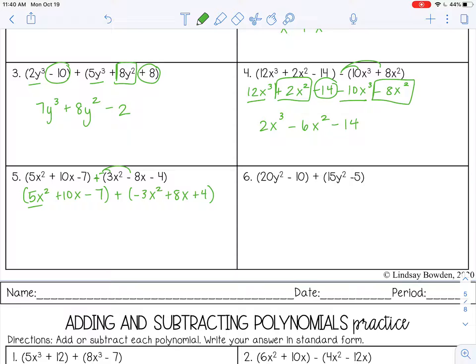So these are like terms. 5 minus 3 is 2x squared. Positive 10 and positive 8, that's positive 18x. Negative 7 and positive 4, that's negative 3.